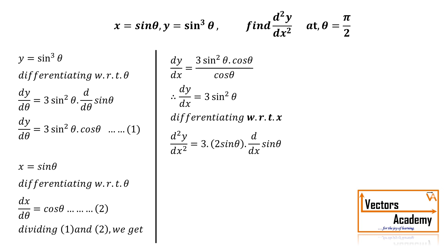On the right hand side, the derivative of sin² θ is 2 sin θ into derivative of sin θ. The derivative of sin θ is cos θ. But we are differentiating with respect to x, so there will be an extra term, that is dθ by dx.